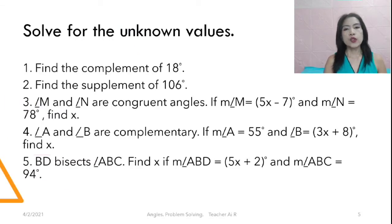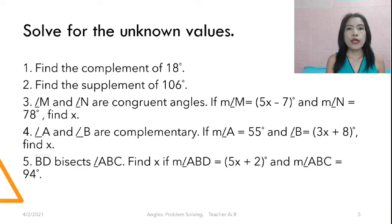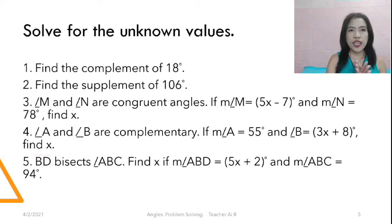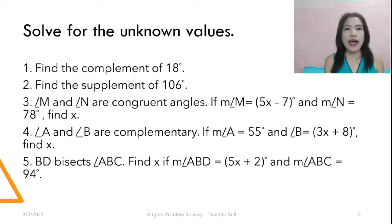So let's go to problem solving. We're going to solve for the unknown values. Number one: find the complement of 18 degrees. Number two: find the supplement of 106 degrees. And for number three: angle M and angle N are congruent angles, so they are the same. If the measure of angle M is equal to 5X minus 7 degrees and the measure of angle N is 78 degrees, find X.